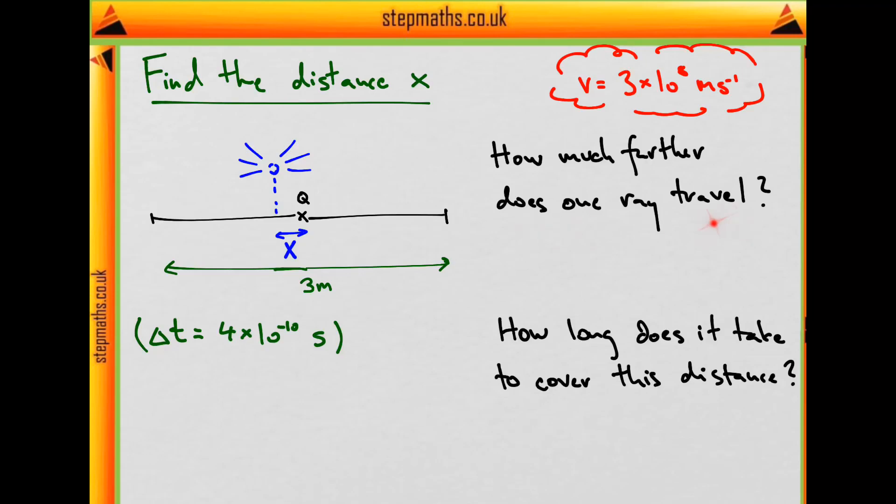The answer to the first question is 2x. And hence it will take 2x divided by v to cover that extra distance, that's delta t. And that's the same delta t as the difference between the detector measurements.